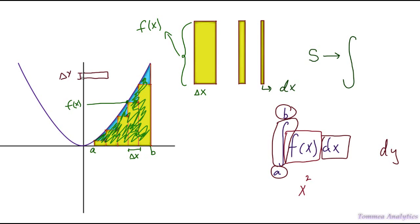But over here, the widths are with respect to y. So when you shrink this width down, you get dy.